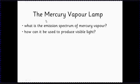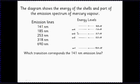Okay, so now we've got the basic ideas of emission spectra. What we can do is look at that specific example, the mercury vapor lamp, and we're going to look at the emission spectrum of mercury vapor and then try to see how that can be used to produce visible light.